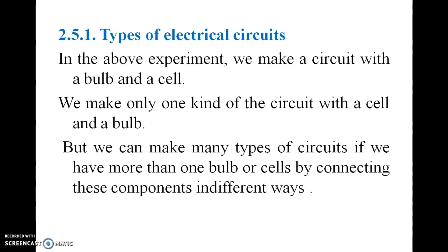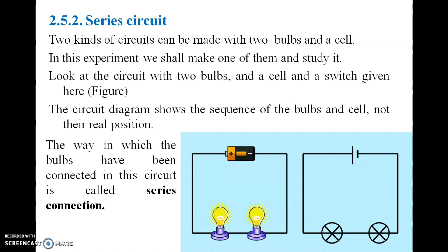There are different types of electrical circuits. In a series circuit, components like two bulbs and a cell are connected in a single loop. The way bulbs are connected in this configuration is called series connection. The circuit diagram shows the sequence of components, not their real positions.